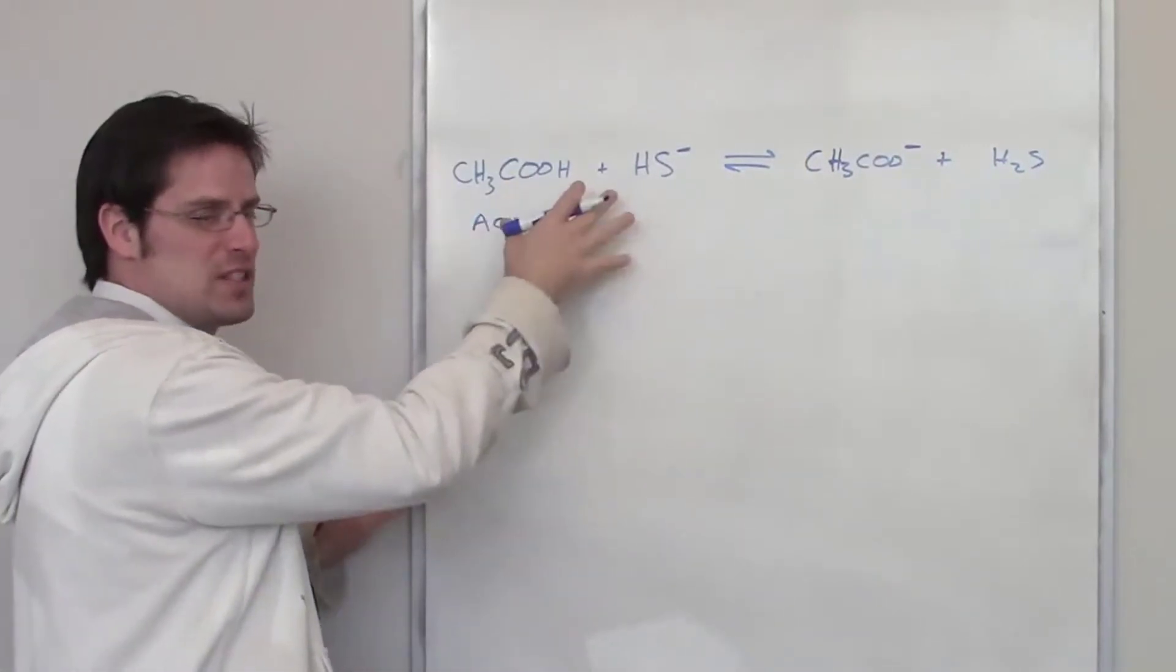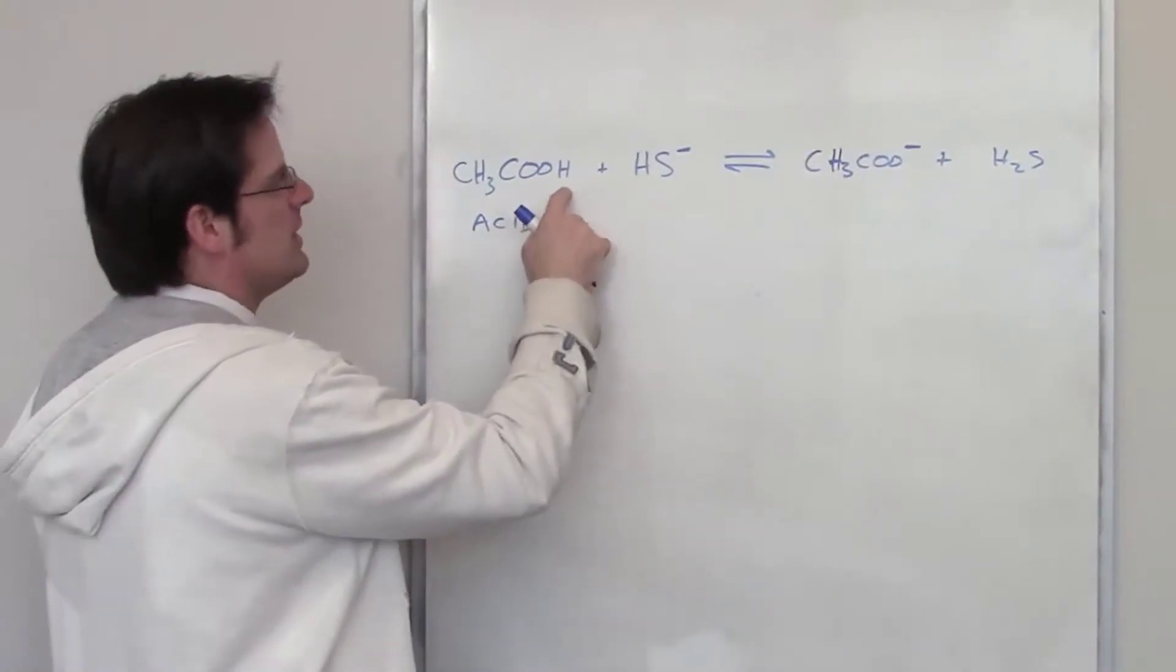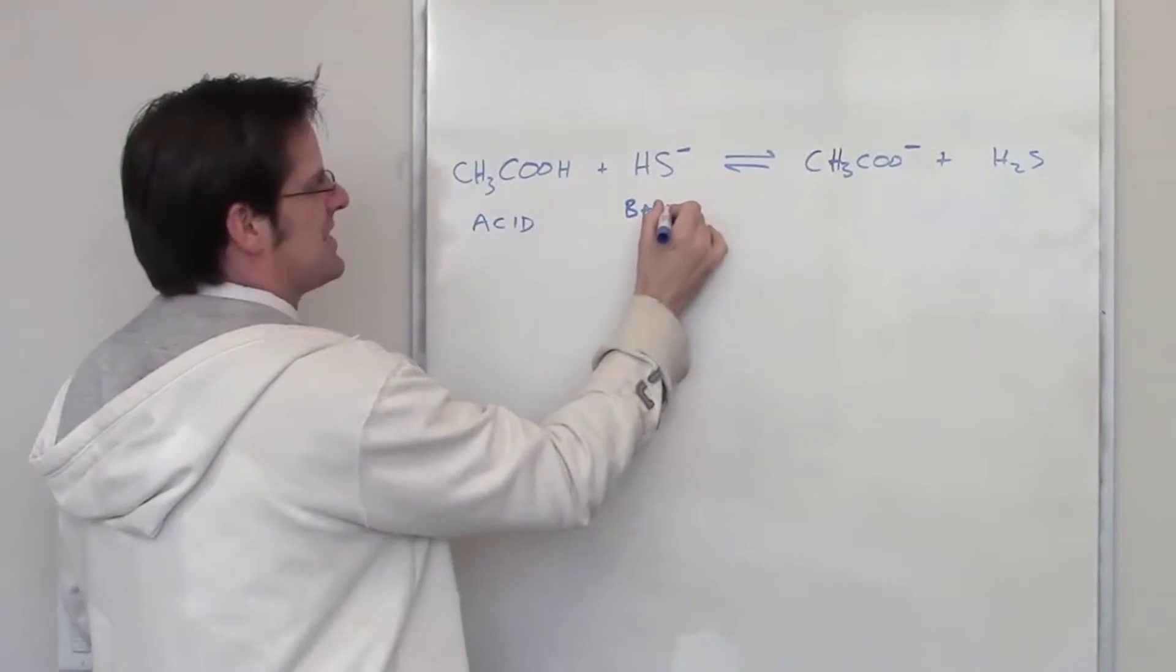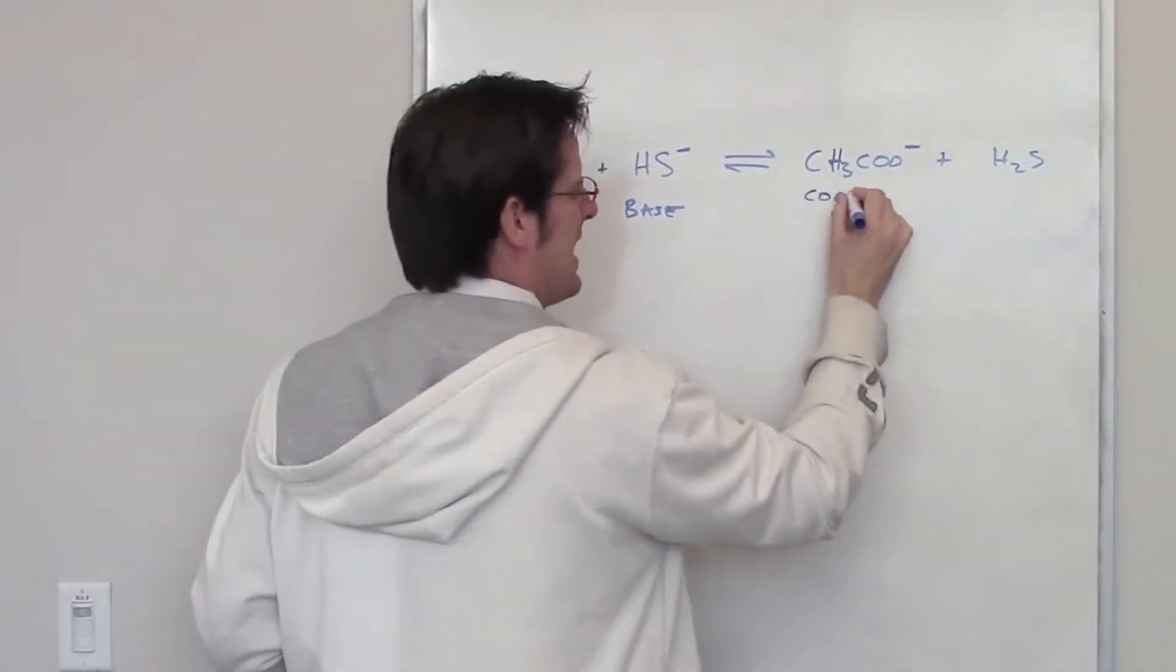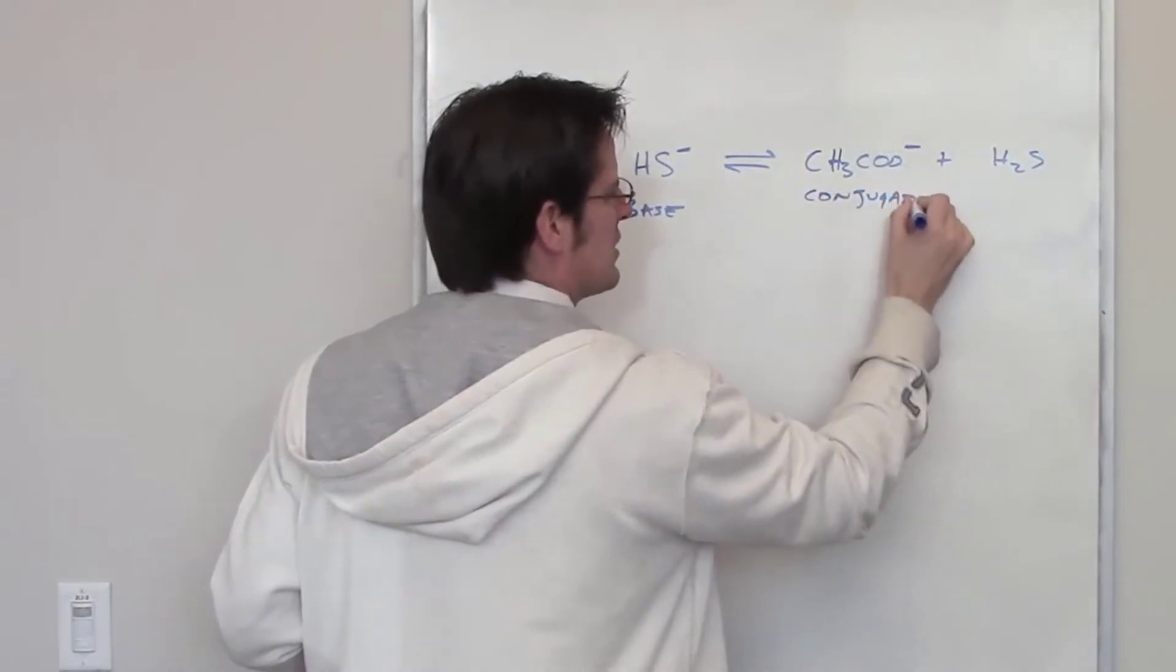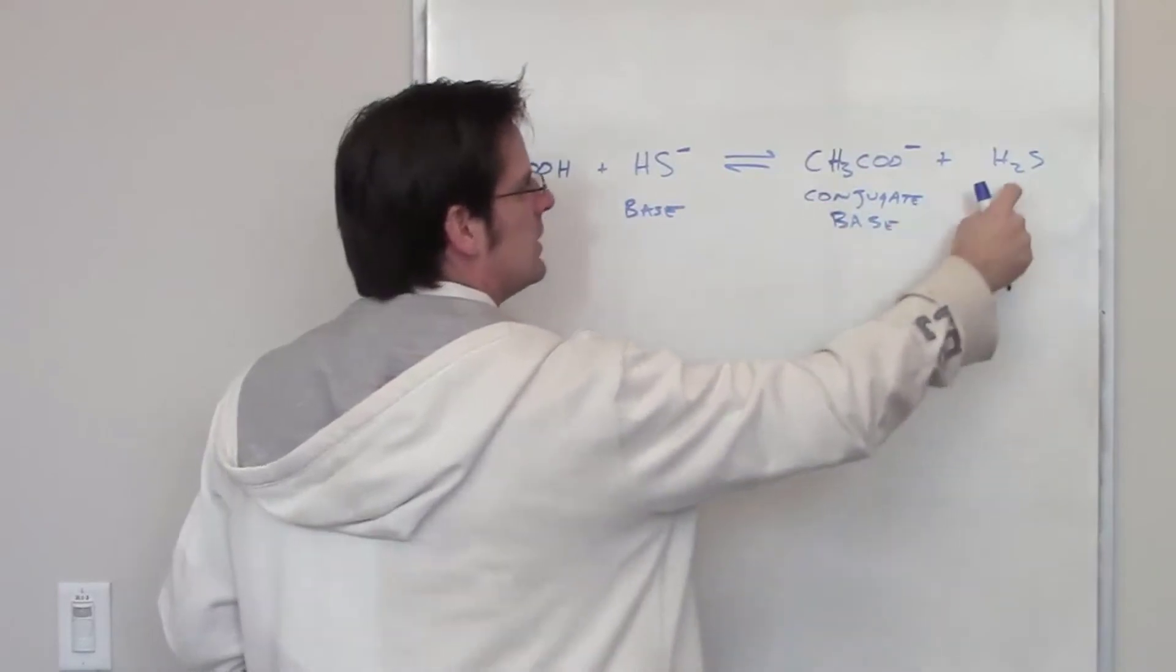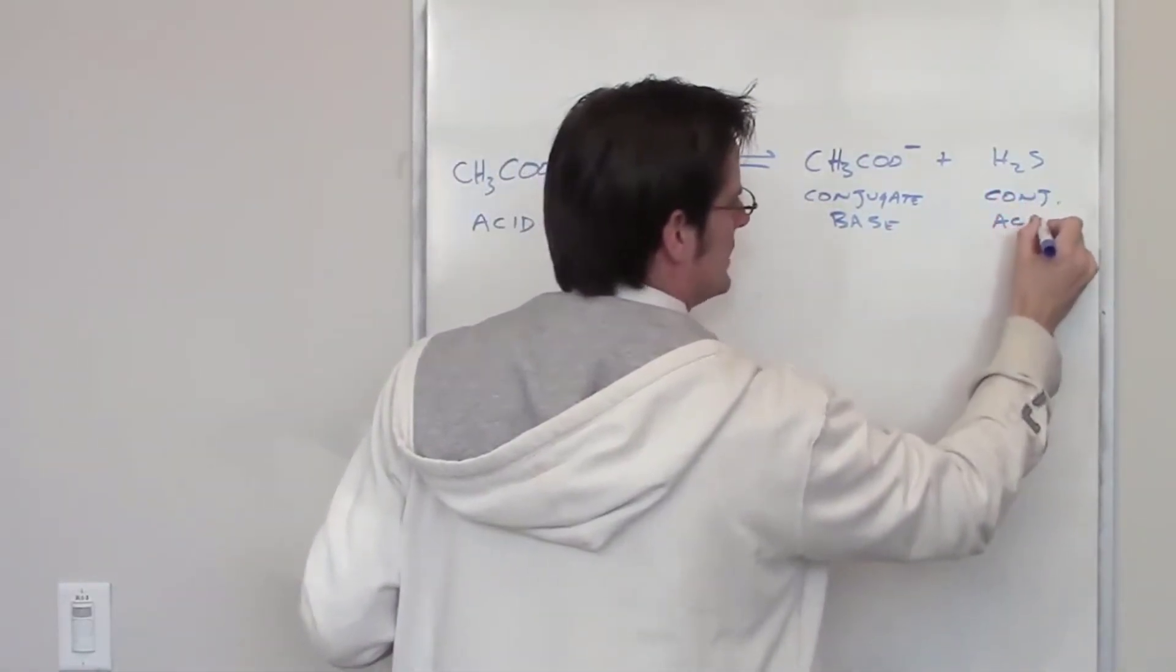Which of the two things on the left side of the equation accepted that hydrogen or stole this hydrogen? It's this guy right here. That's the base. The thing that this acid turns into over here is its conjugate base. And the thing that this base turns into is its conjugate acid. So I'll just abbreviate that as conj-acid.